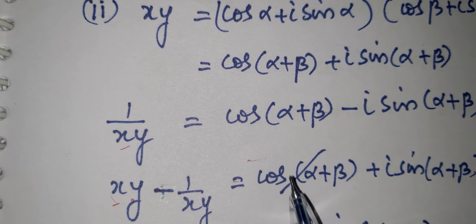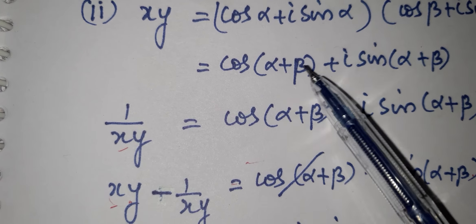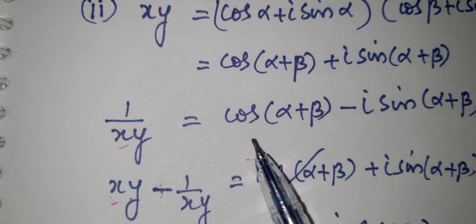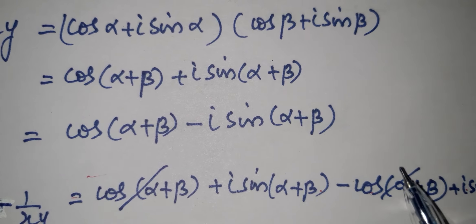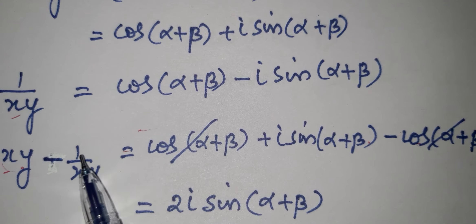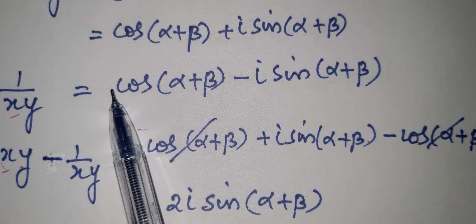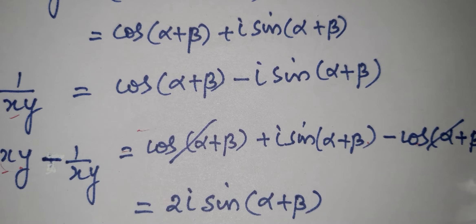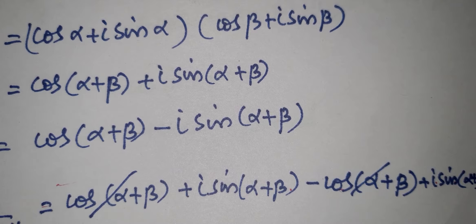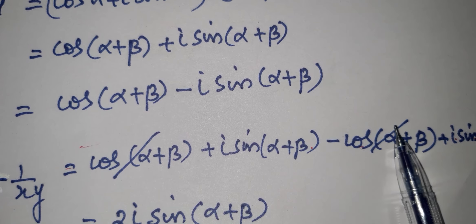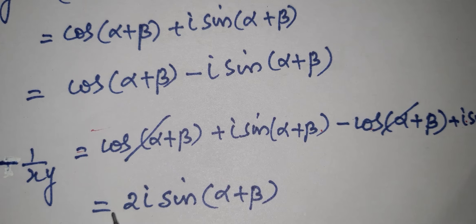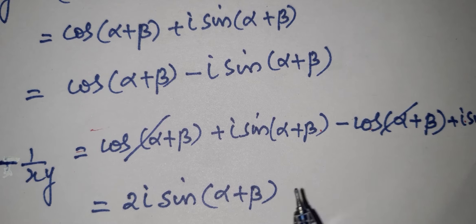xy minus 1 by xy equals xy value minus 1 by xy value. This gives cos(α+β) minus (minus cos(α+β)), which results in 2i·sin(α+β).